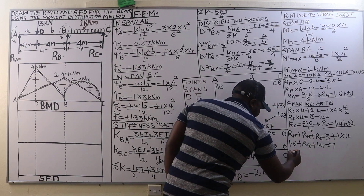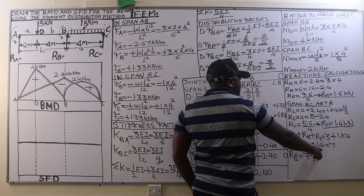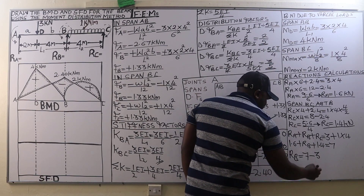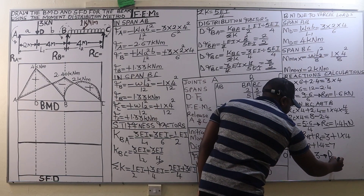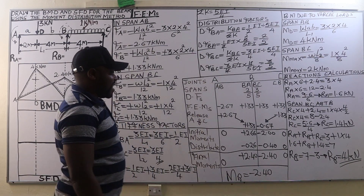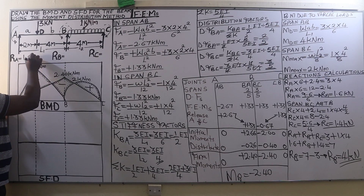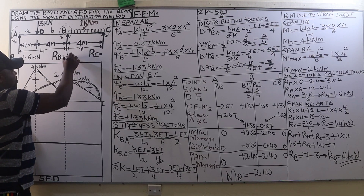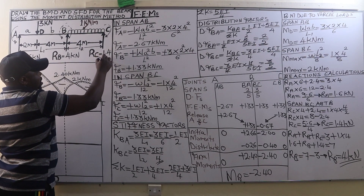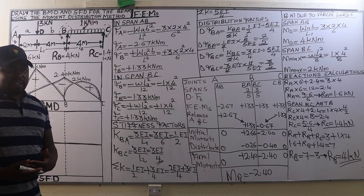Therefore RB equals 7 minus 1.6 plus 1.4, which is 3, so RB equals 7 minus 3, giving a reaction at B of 4 kilonewtons. We then write these reactions on our loaded beam: reaction at A is 1.6 kilonewtons, reaction at B is 4 kilonewtons, and reaction at C is 1.4 kilonewtons. These reaction values will help us determine the shear forces.